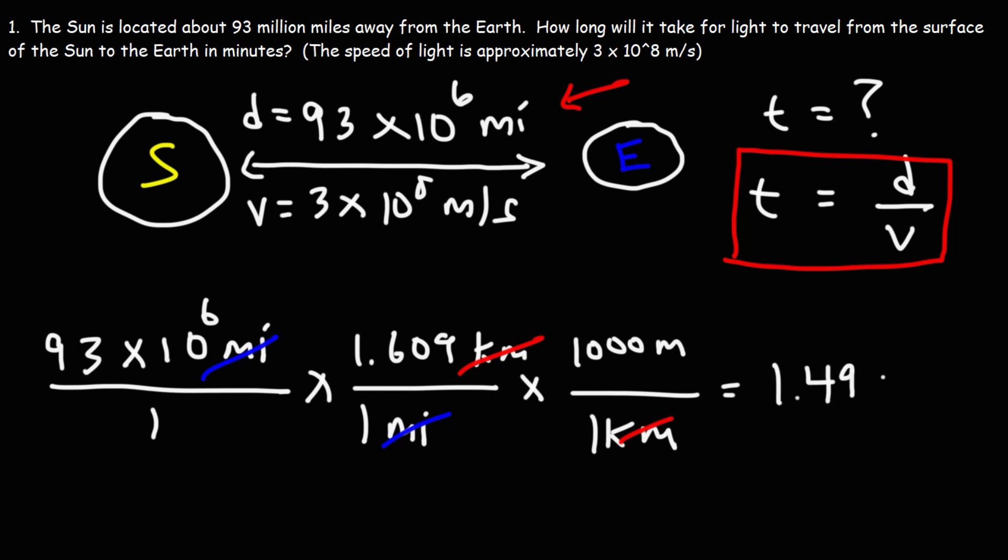So we get the distance in meters which is 1.496 times 10 to the 11, which is around 1.5 times 10 to the 11. So now we could use this formula and it's going to give us the time in seconds, which we'll convert to minutes later.